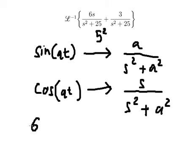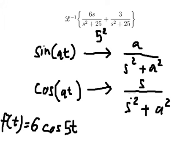And we have s over s squared plus a squared. a in this situation, that's about number 5. So we have cosine 5t.